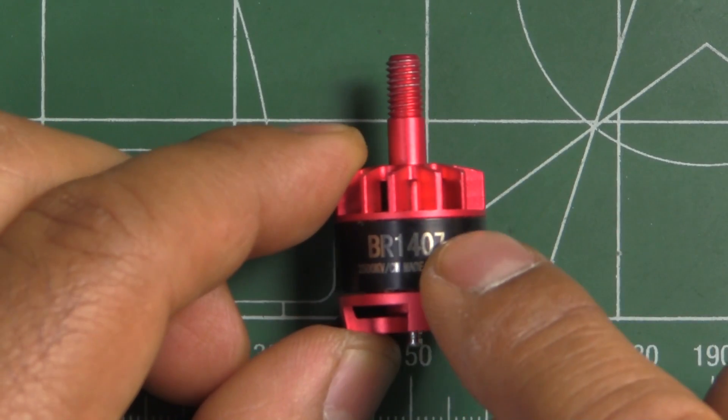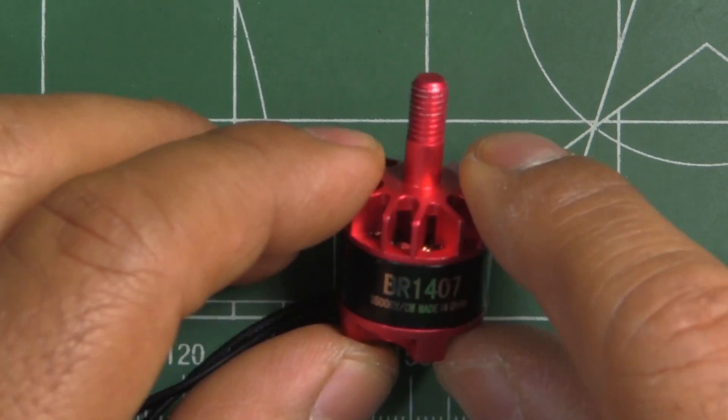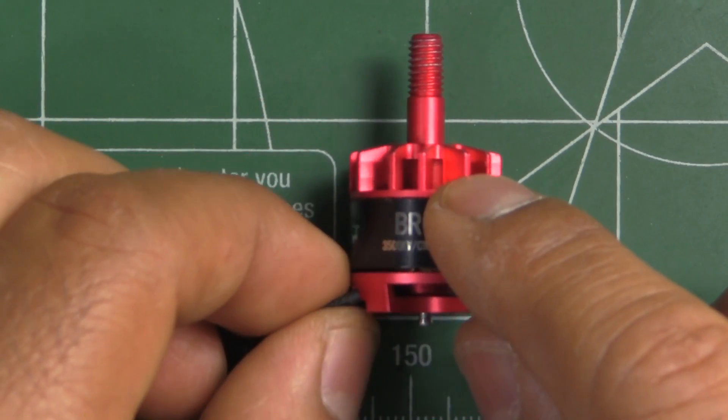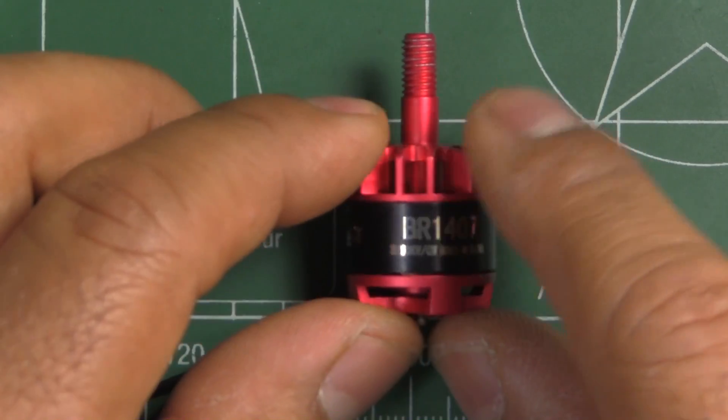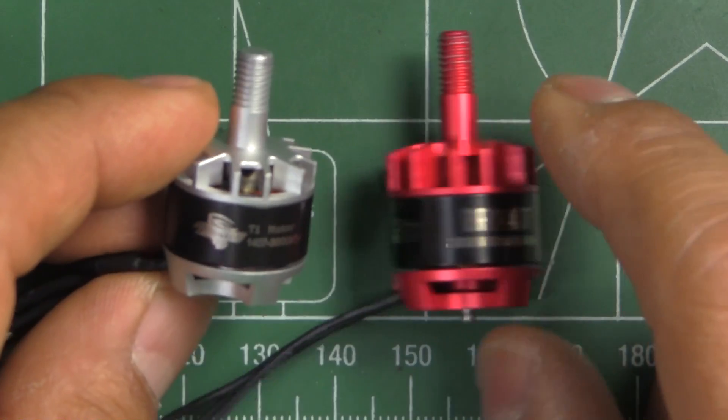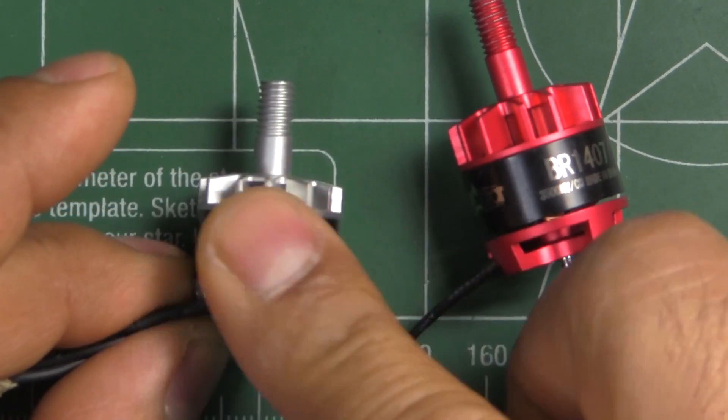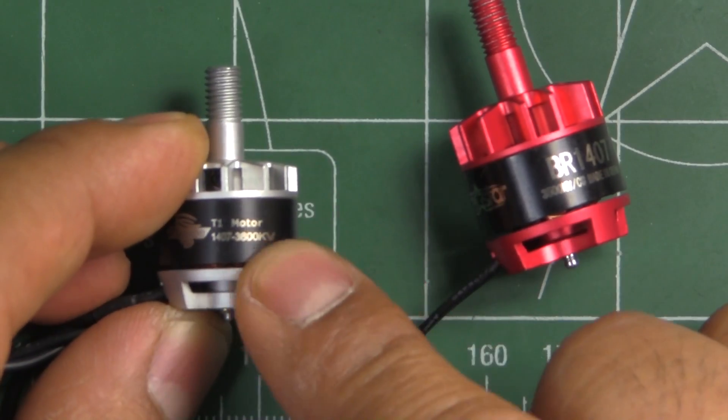So when it was released I went ahead and ordered one because I was interested to see how a low budget 1407 motor would perform. At that time and still, the Brother Hobby 1407 is pretty much the standard, it's the motor that everybody wants to equal or beat.